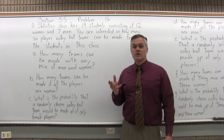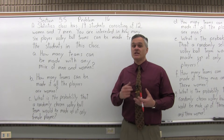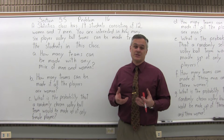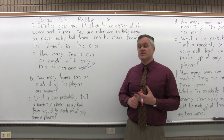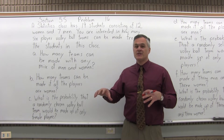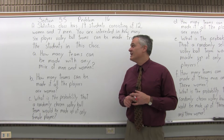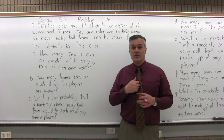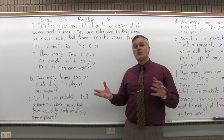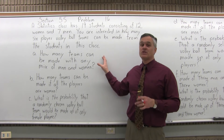We have three different formulas from this section: permutation, combination, and multiplication principle. For permutation, there are no repeated items and different orders count as different answers. But if you have the same six players in a different order, it's the same volleyball team. So combination is the one to go with, because there should be no repeats — you can't have a repeated player — and different orders don't matter because it's still the same volleyball team.